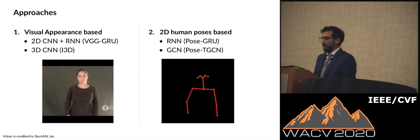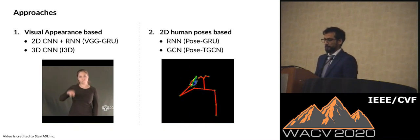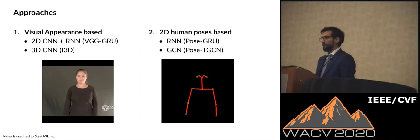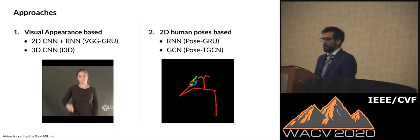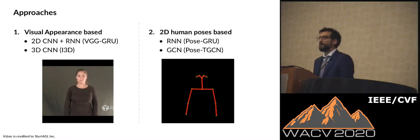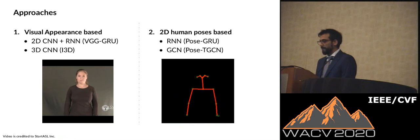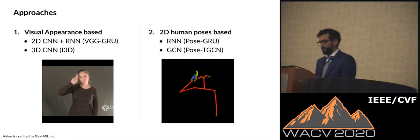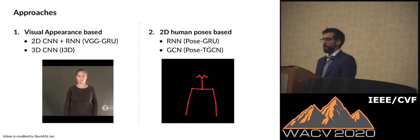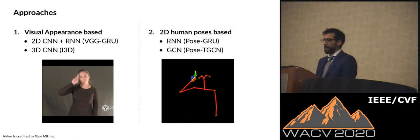We evaluate recognition performance with two different approaches: based on visual appearance on the left, and 2D human poses on the right. For the visual appearance approach, we choose BD-GRU as a representative for 2D convolutional networks plus recurrent networks, and I3D for 3D convolutional networks. We also intend to analyze to what extent human body gestures themselves can be used for sign language recognition. In this setting, we use GRU and also our proposed pose-temporal graph convolution network.